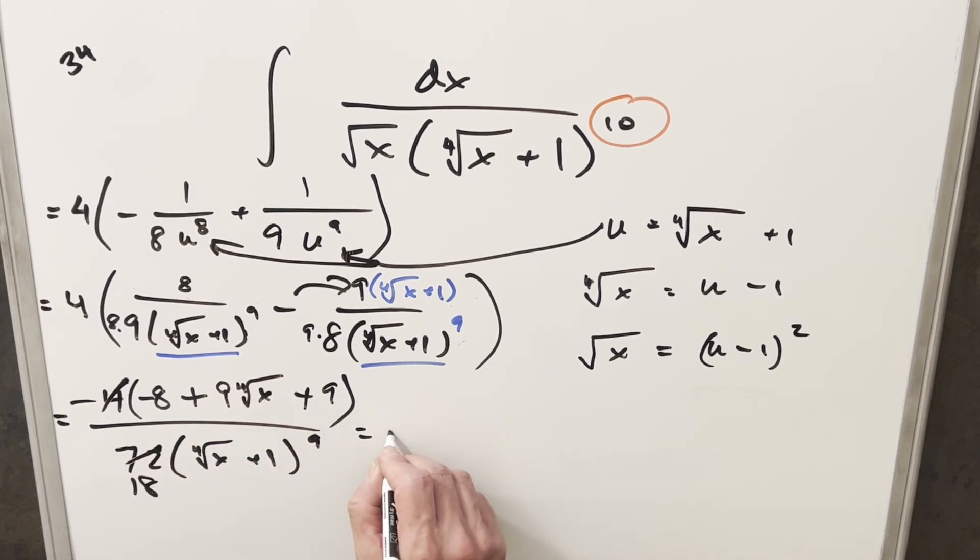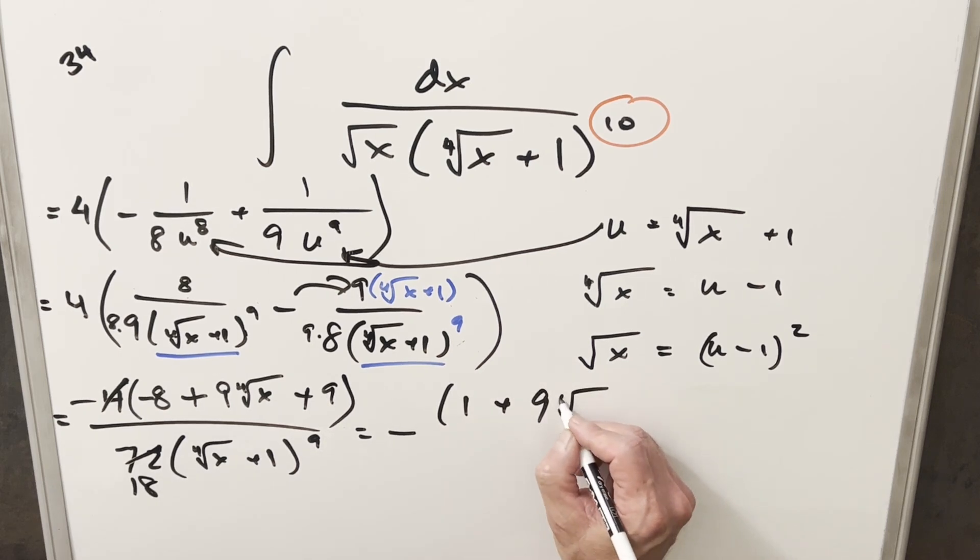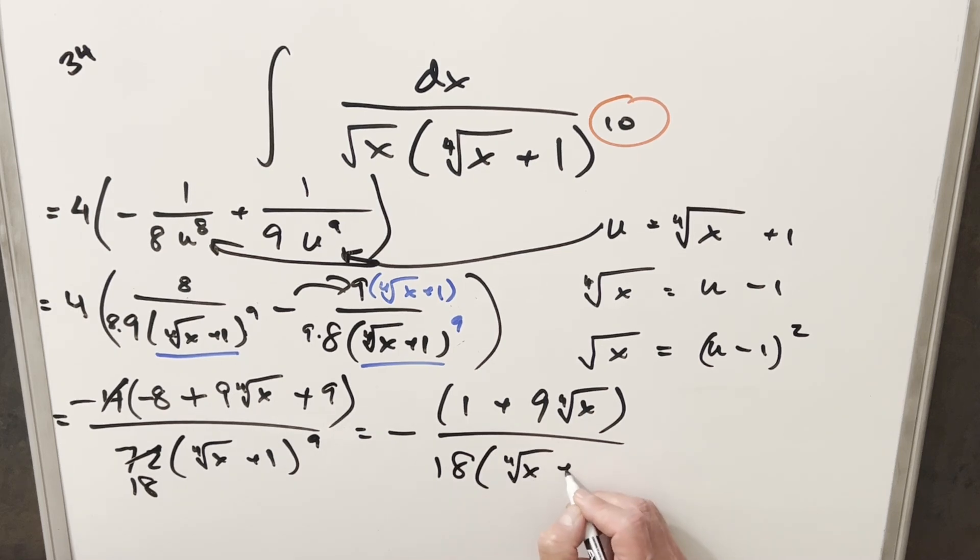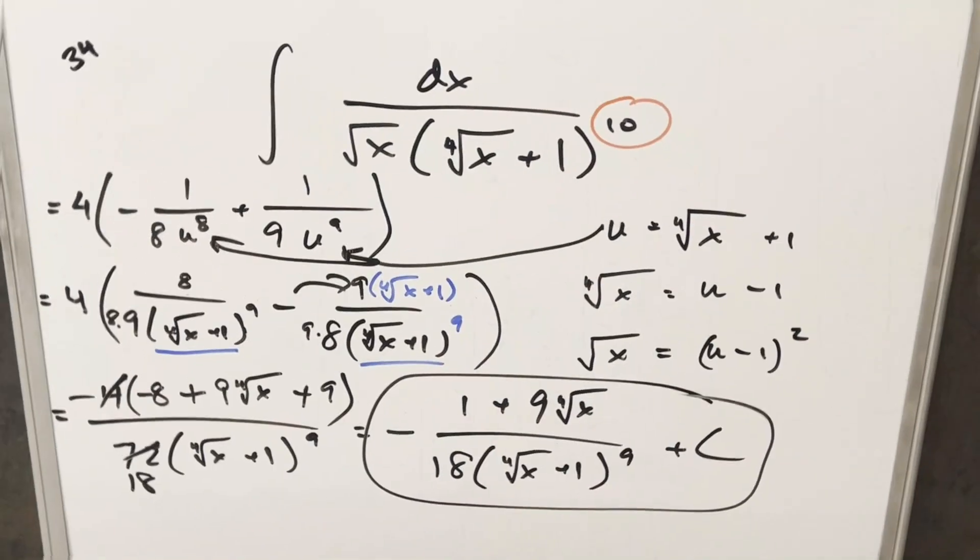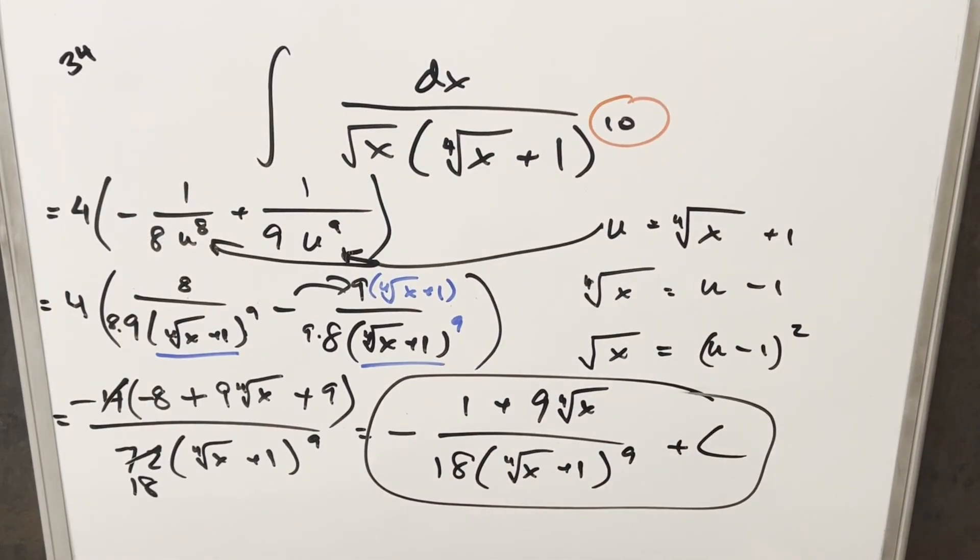So when we put this together for the final solution we'll have minus sign out front. 9 minus 8 gives me a 1 here plus 9 times the fourth root of x over this stuff right here which is just going to be 18 times the fourth root of x plus 1 to the 9th. Add a plus c and that's it. Okay there you have it. Good problem from MIT 2006. Thanks everyone for watching. Have a good day.